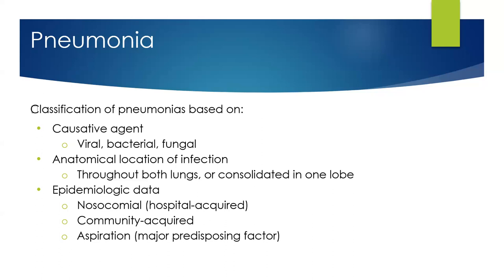Nosocomial means it was acquired while in the hospital. Pneumonia can also be community-acquired, meaning they obtained it in the community — often in a nursing home or other tight-quarter living situation. Finally, pneumonia can be caused by aspiration, which is when we inhale food or fluid into the sterile space of the lung where it doesn't belong. The lungs recognize that as a foreign body, which can progress to pneumonia. This is common in the elderly population or people with swallowing issues along with poor immunity.